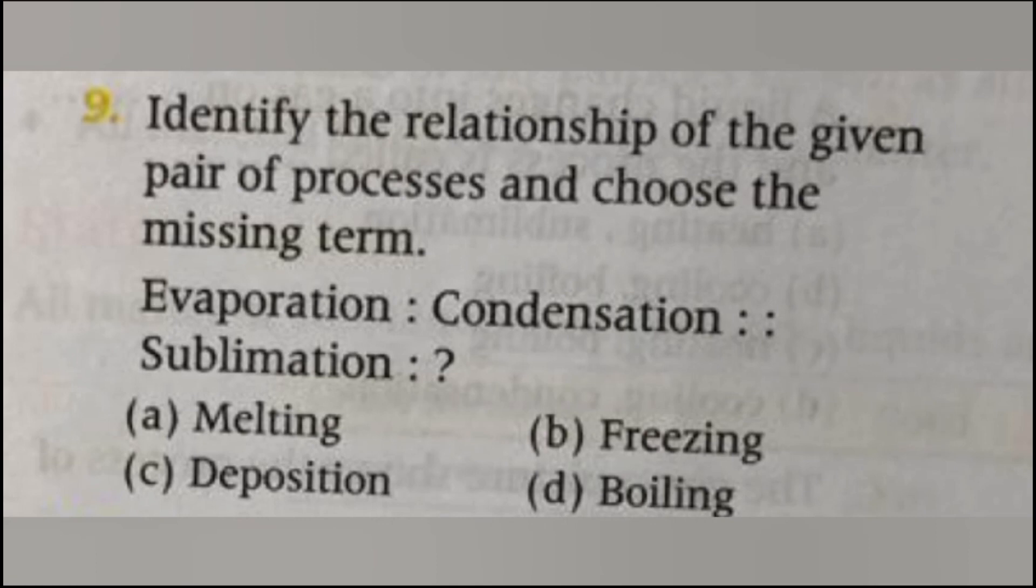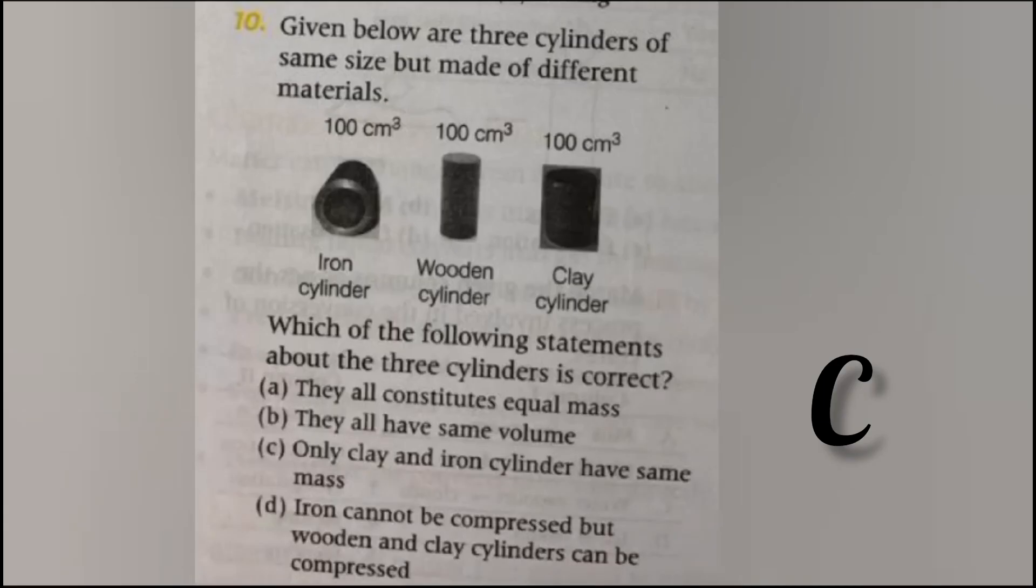Identify the relationship of the given pair of processes and choose the missing term. Evaporation is to condensation as sublimation is to what? The answer is C, deposition.